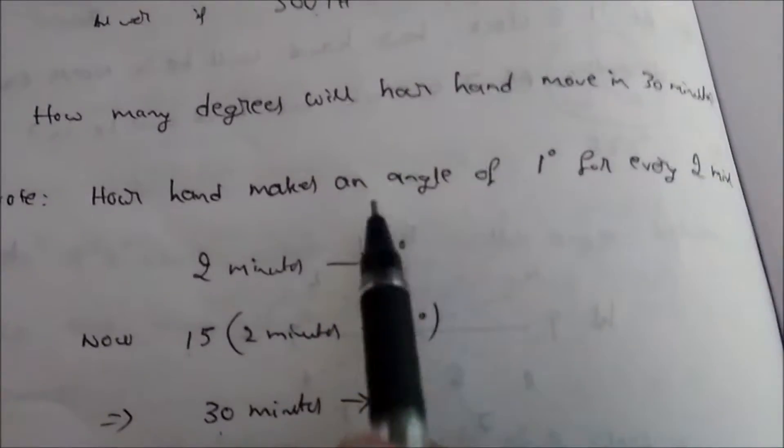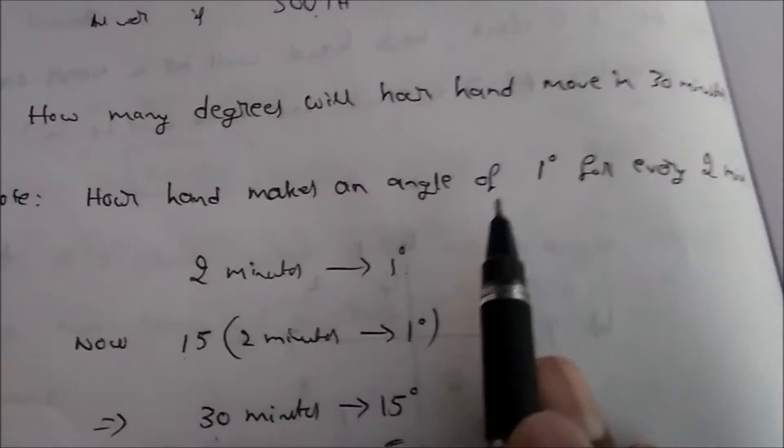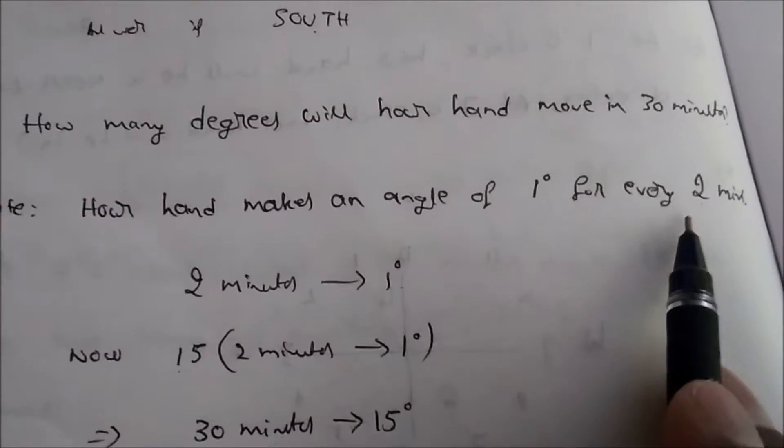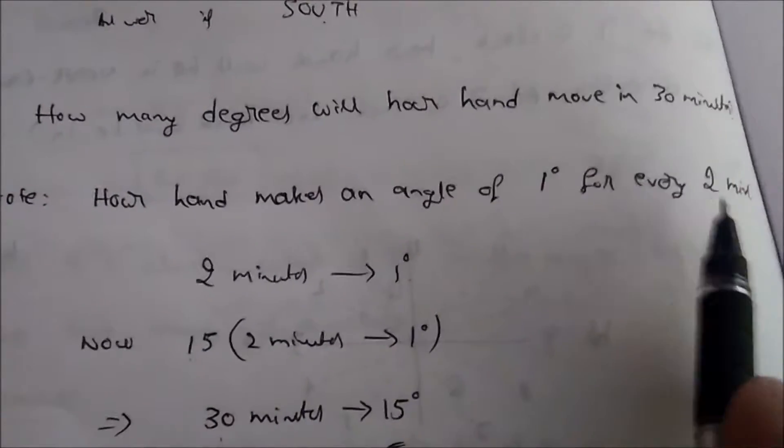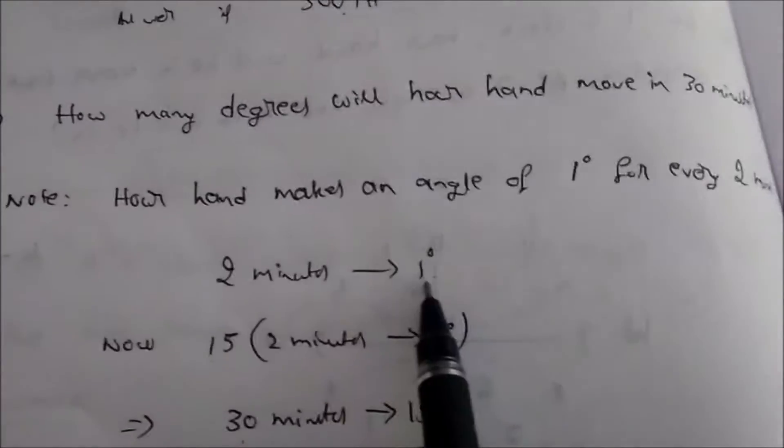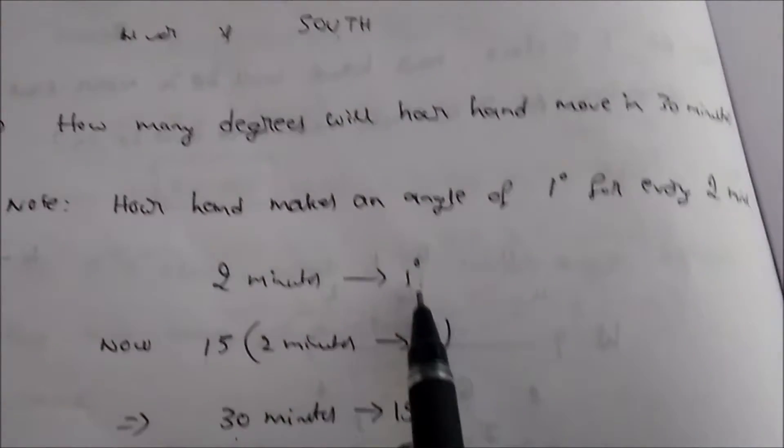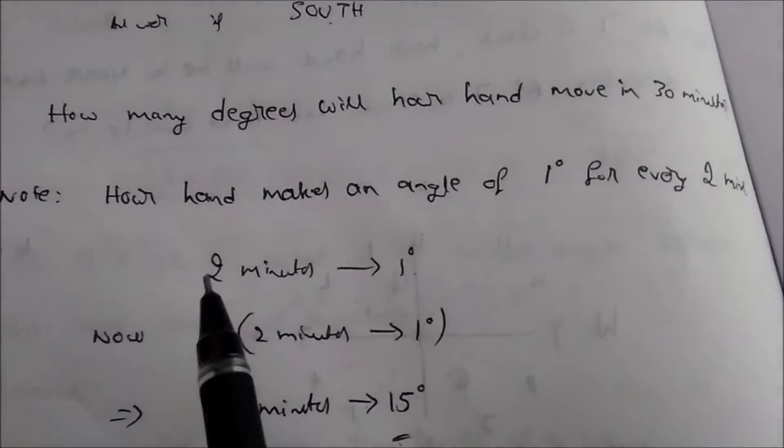There is a standard value. Hour hand makes an angle of 1 degree for every 2 minutes. See, for every 2 minutes hour hand makes 1 degree. For 2 minutes it makes an angle of 1 degree.